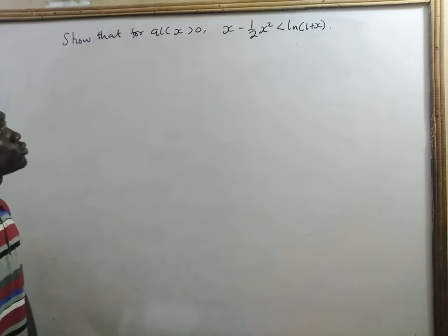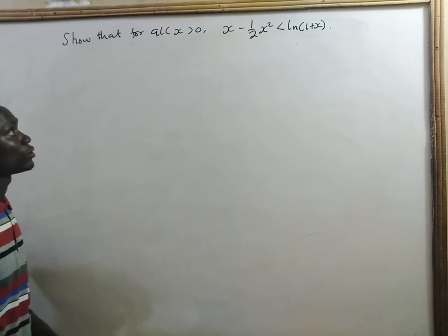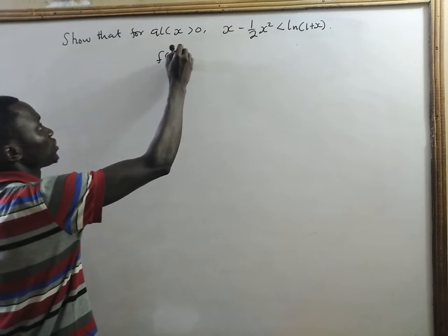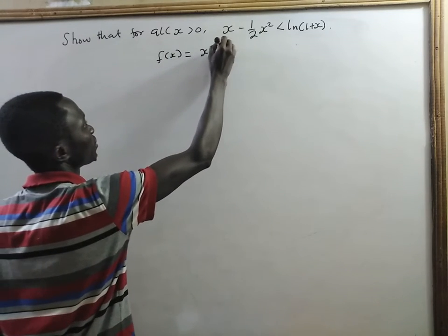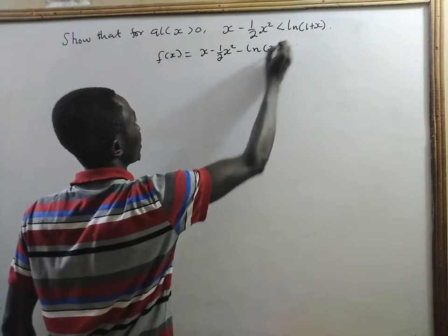Now, we are going to apply the mean value theorem here. So, let's write f(x) to be equal to x minus half of x squared minus natural log of x plus 1.